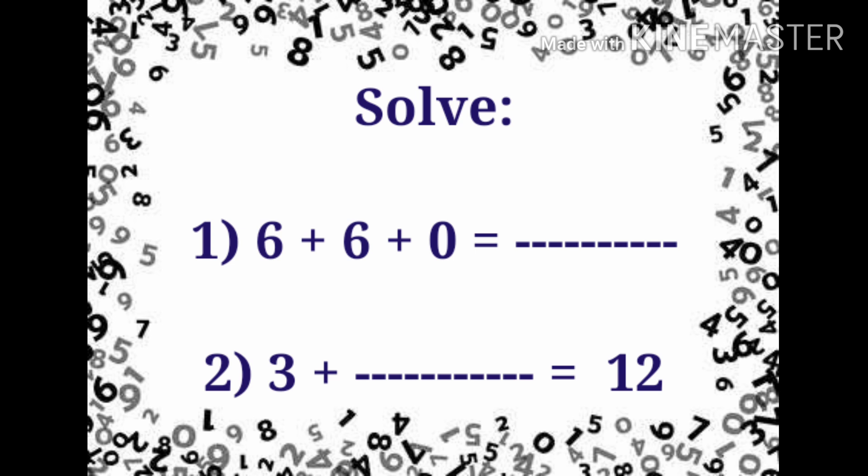Next, solve this one. 6 plus 6 plus 0. What is the answer? 3 plus dash equal to 12.